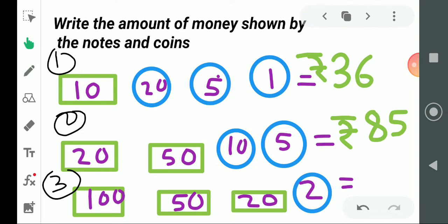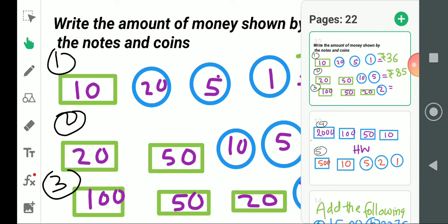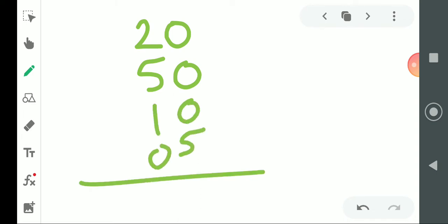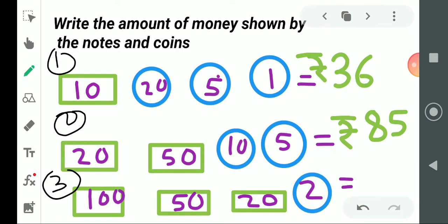So this is done. Now students, here see, you can write 20, 50, 10, 5. Now you can add this: 5 plus 0 plus 0 plus 0, answer is 5. Here 0 plus 1 is 1, 1 plus 5 is 6, 6 plus 2 is 8, answer 85. So this way you can add this.